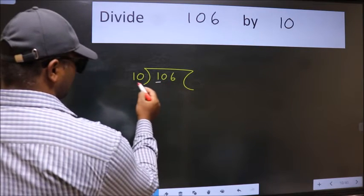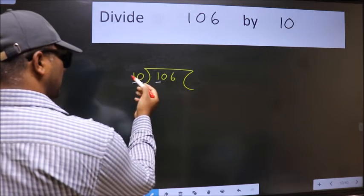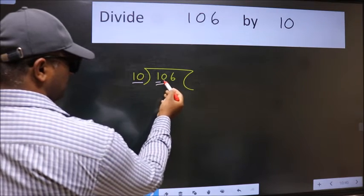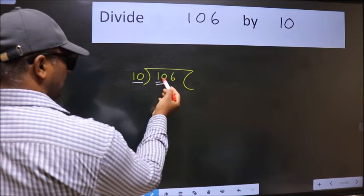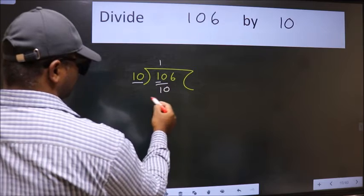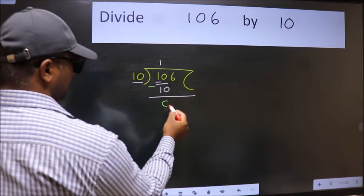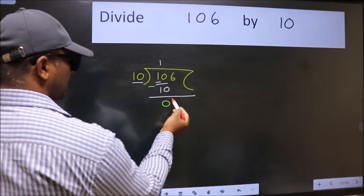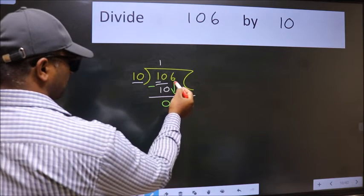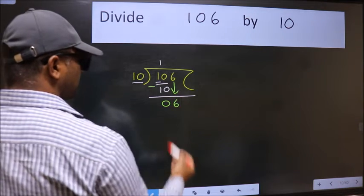106. We have 1 and here 10. 1 is smaller than 10, so take 2 numbers: 10. When do we get 10 in 10 table? 10 once 10. Now we should subtract. We get 0. After this, bring down the beside number. So 6 down.